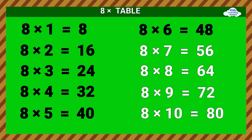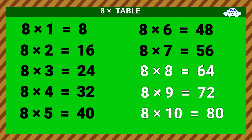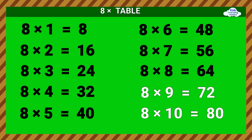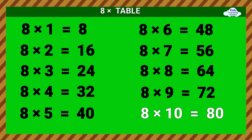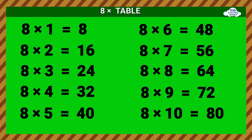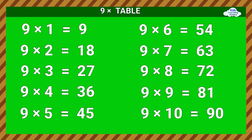8 times 7 equals 56. 8 times 8 equals 64. 8 times 9 equals 72. 8 times 10 equals 80. Nine Times Table.